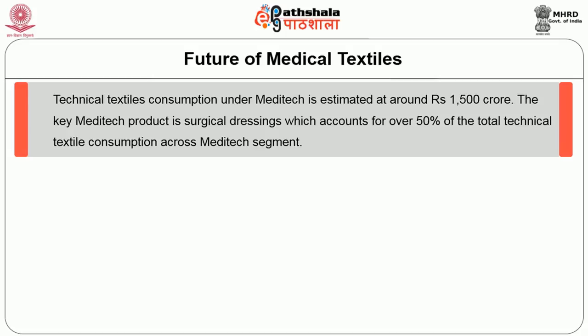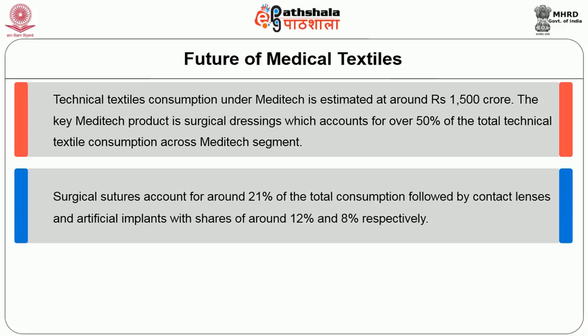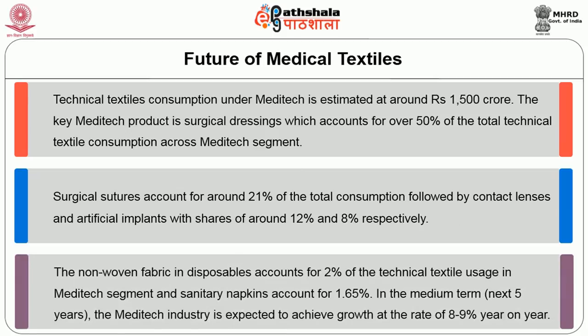Technical textile consumption in medical textiles is estimated at around Rs. 1500 crores. The key medical textile product is surgical dressing, which accounts for over 50% of the total technical textile consumption across the medical textile segment. Surgical sutures account for around 21% of total consumption, followed by contact lenses and artificial implants with a share of around 12% and 8% respectively. Non-woven fabrics in disposables account for 2% of technical textile usage in medical textiles, and sanitary napkins account for 1.65%. In the medium term, for the next 5 years, the industry is expected to achieve a growth of 8 to 9% every year.